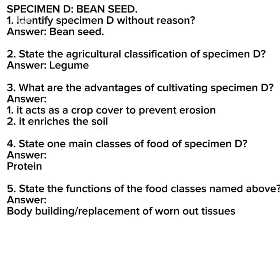Specimen D is a bean seed. You may be asked: number one, identify Specimen D without reason — answer, bean seed. Number two, state the agricultural classification of Specimen D — answer, it is a legume. Question three: what are the advantages of cultivating Specimen D?